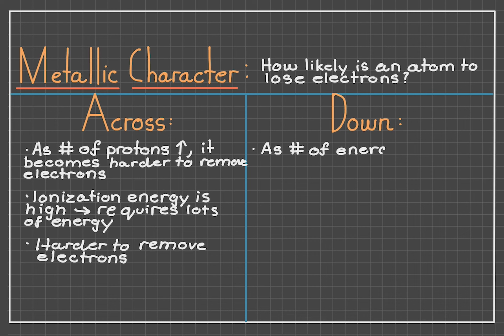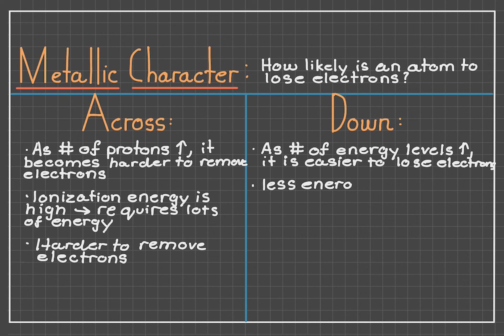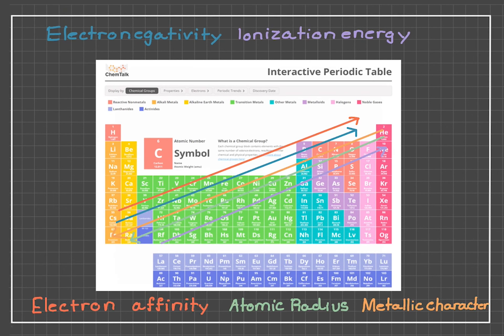As we go down the periodic table, it becomes a lot easier to take away electrons because of the large atomic radius, as the nucleus doesn't have as big of an impact on our electrons anymore, meaning that metallic character is going to increase as we go down. Here's a quick summary of all the trends we've explored in this video on the periodic table to show you visually how the trends are going to look. Thank you so much for tuning into ChemTalk, and I'll see you in the next video.